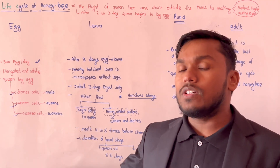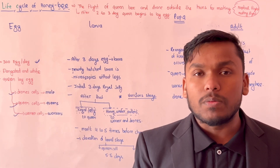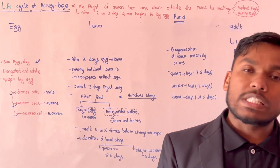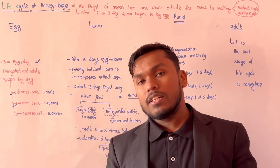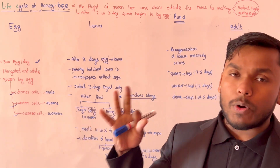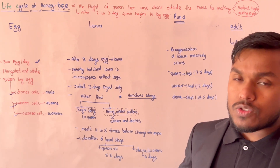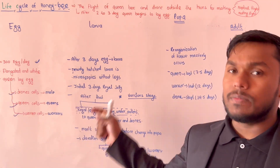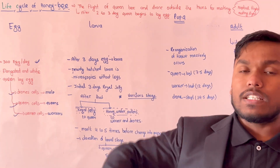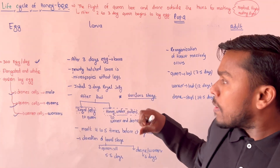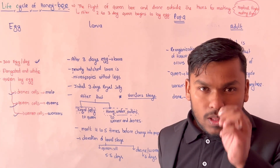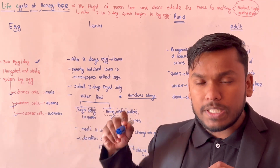The queen cell is called the queen cell, the worker cell is the worker cell, and the drone cell is the drone cell. Now, one larva is called after the egg hatches. The newly formed larva is microscopic — a microscopic larva.